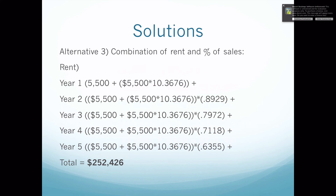The 10.3676 is the present value of an annuity of 11 periods at 1%. The 0.8929 is the PV factor for 1 year at 12%. Going down, 0.7972 is PV for 2 years at 12%, 0.7118 is PV for 3 years at 12%, and 0.6355 is the PV for 4 years at 12%.